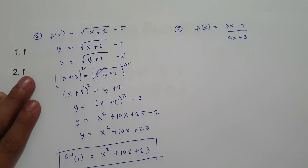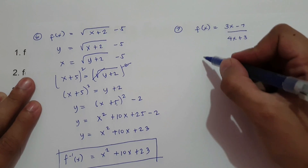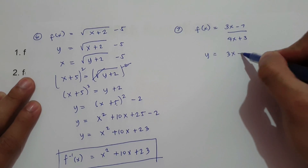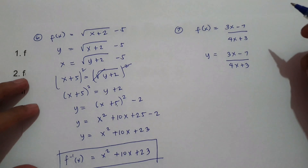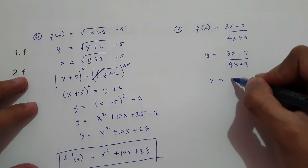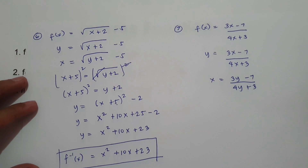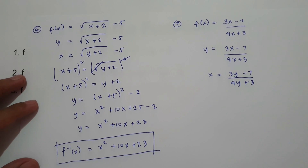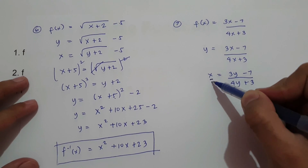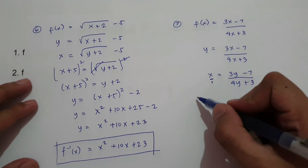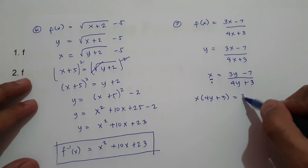What about number 7? Change f of x in terms of y: y equals 3x minus 7 over 4x plus 3. Then switch x and y: x equals 3y minus 7 over 4y plus 3. Since we do not have a denominator on x, we write 1 on the denominator and cross multiply: x multiplied by 4y plus 3, and 1 multiplied by 3y minus 7.